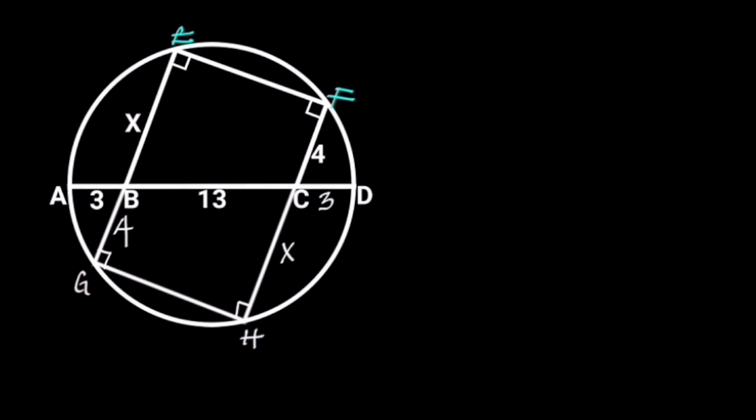Now, to find X, let's focus on GE and AD. Observe that GE and AD are intersecting chords.